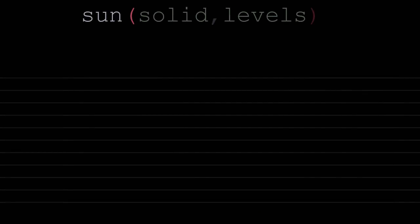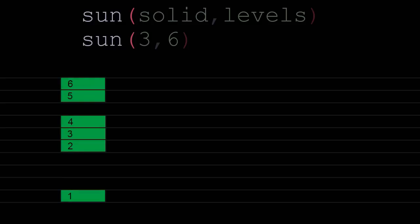The function has two parameters: solid and levels. In my case, solid is always equal to 3 and I don't touch it, but I dynamically change the levels right during modeling. This variable means the number of cell layers that can potentially receive energy. Let's consider the option when the parameters are equal to 3 and 6. Since levels equals 6, we'll take the top 6 layers of cells and assign them numbers from 6 to 1. This will be the first multiplier to calculate the energy amount. Solid equals 3, so let's put 3 layers on the top layer and go down. If there is a cell on the current layer, on the next layer we will decrease the variable by 1. If the layer is empty, on the next layer we will increase the variable by 1, but we can't exceed 3.